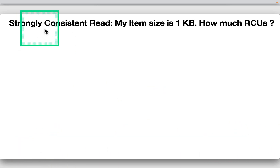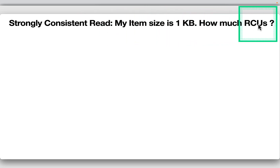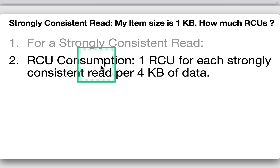Next example: strongly consistent read with an item size of one kilobyte. For a strongly consistent read, the RCU consumption is one RCU for each strongly consistent read per 4KB of data.